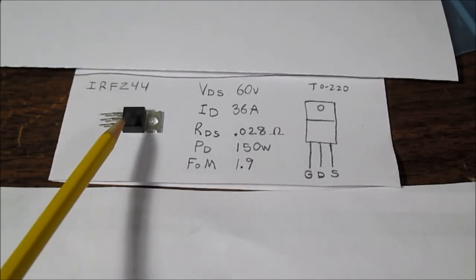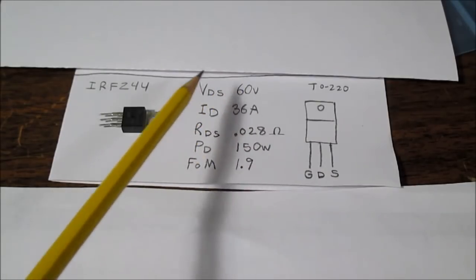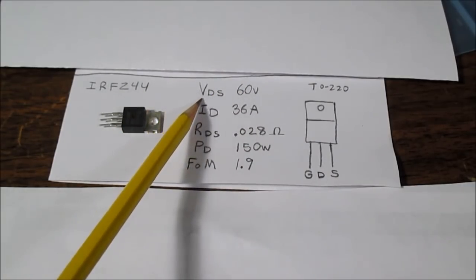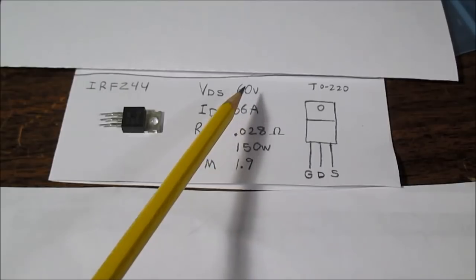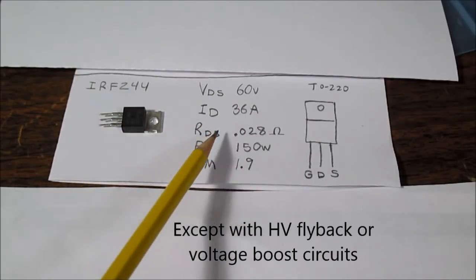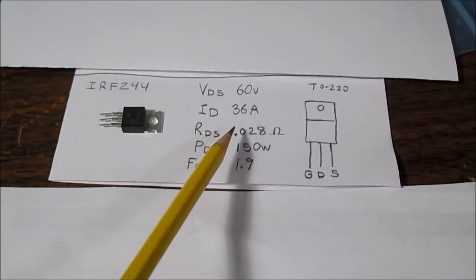So having the lowest possible gate charge would be ideal. And also having this RDS on value as low as possible is quite desirable. So that's kind of why we have that figure of merit rating here.